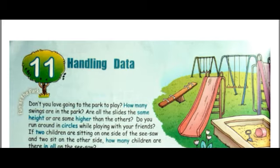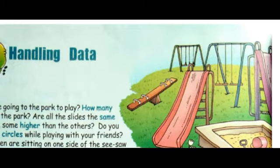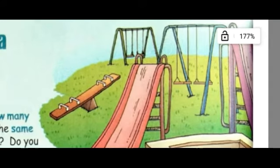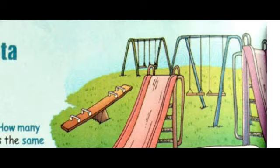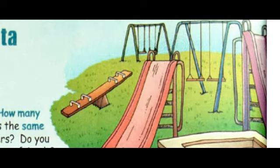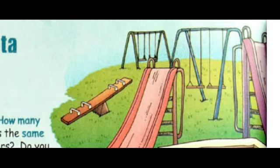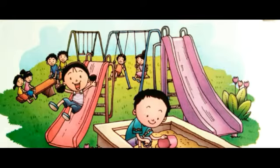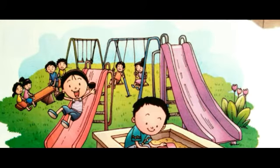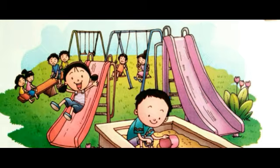Scholars, I know all of you love going to the park to play. Have you ever noticed how many swings are in the park? Or suppose two children are sitting on one side of the seesaw and two sit on the other side — how many children are there in all on the seesaw? This is what we are going to study in this chapter. Data Handling: whatever information is given to you, you need to represent it in a tabular form. Suppose a picture is given to you and questions related to it are being asked — you need to answer those questions.